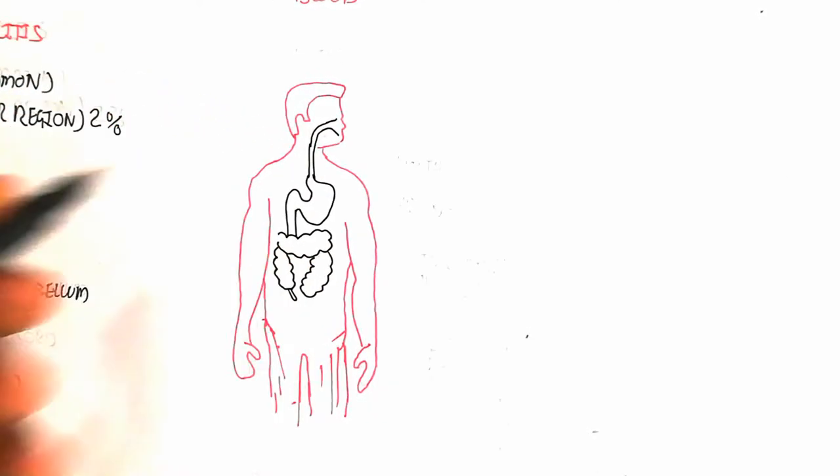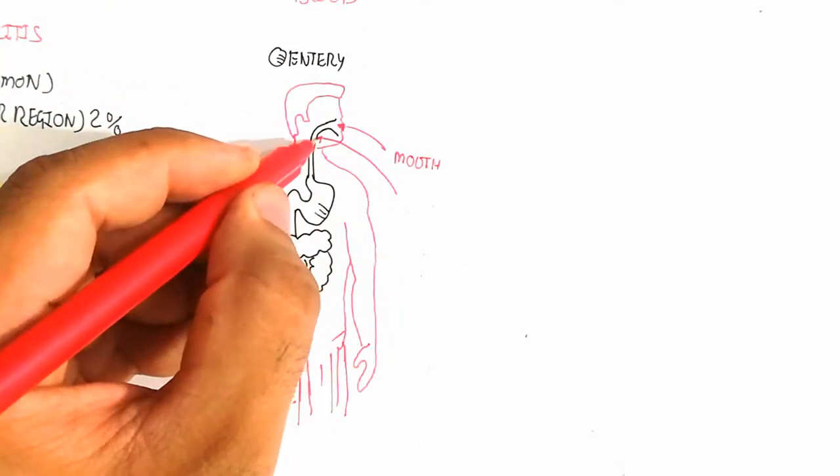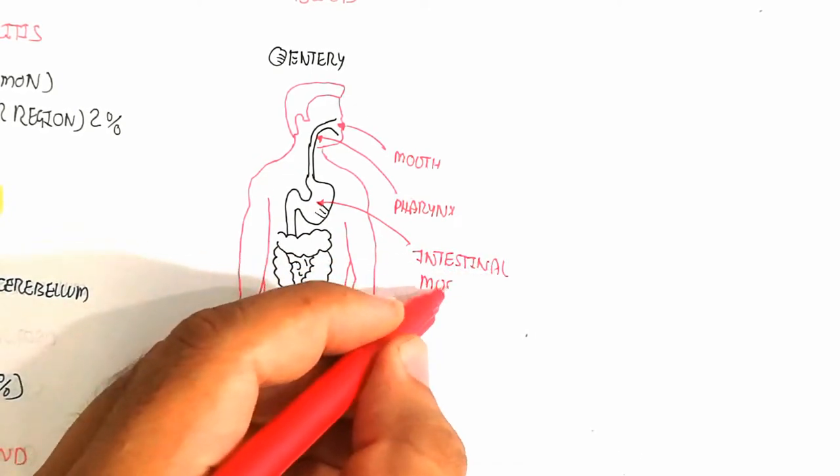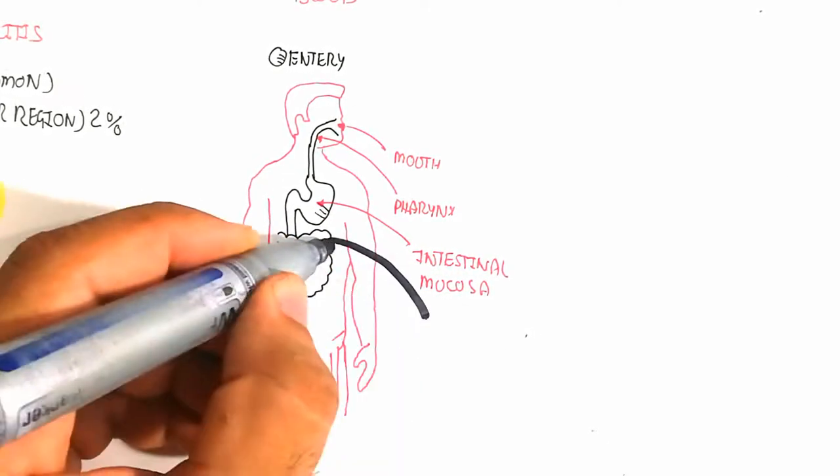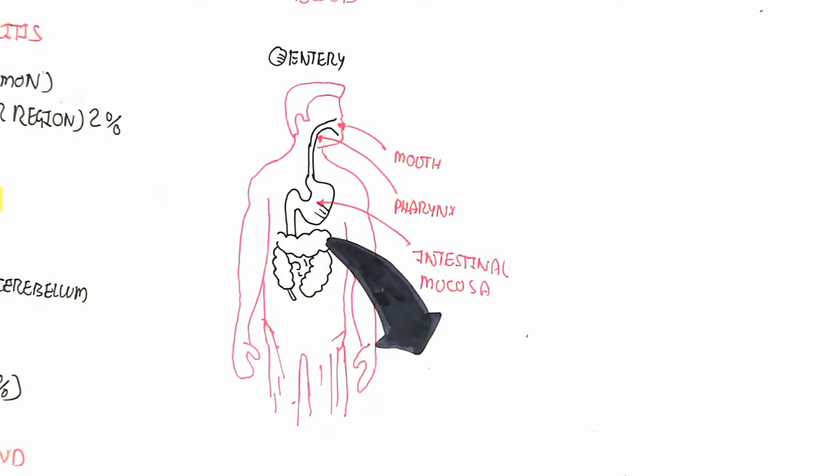Let's begin to understand the entry. First is through the mouth when you eat contaminated food and it goes into the pharynx and intestinal mucosa, which is involved.